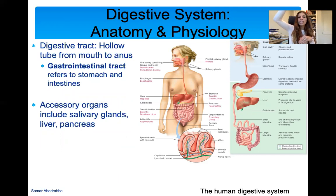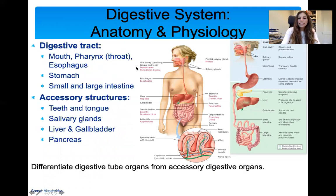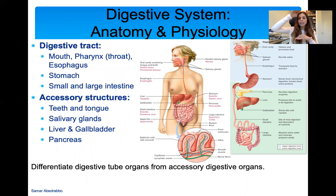The gastrointestinal tract refers specifically to the stomach and intestines. When we talk about GI diseases, we're talking about intestinal and stomach diseases. There are also accessory organs — basically the salivary glands, liver, and pancreas. The digestive tract goes from the mouth to the anus: mouth, then the pharynx (which we talked about in respiratory systems), then the esophagus, then the stomach, then the small intestine, then the large intestine.